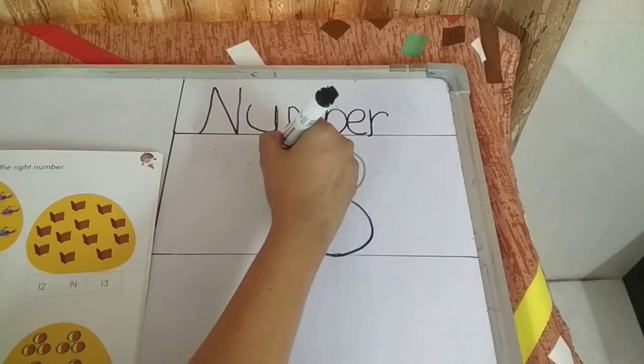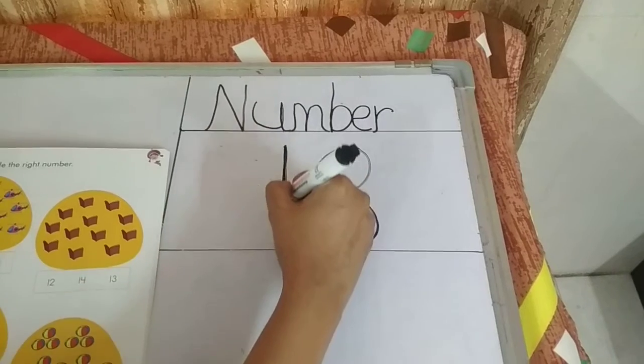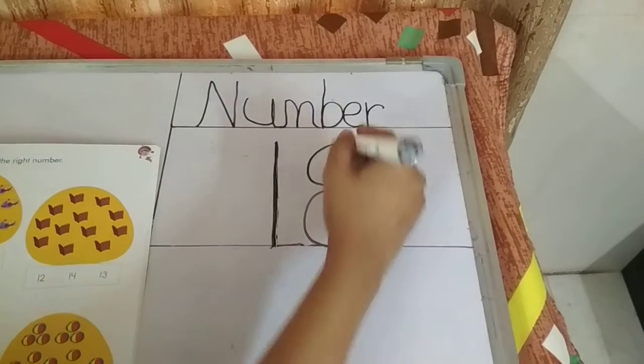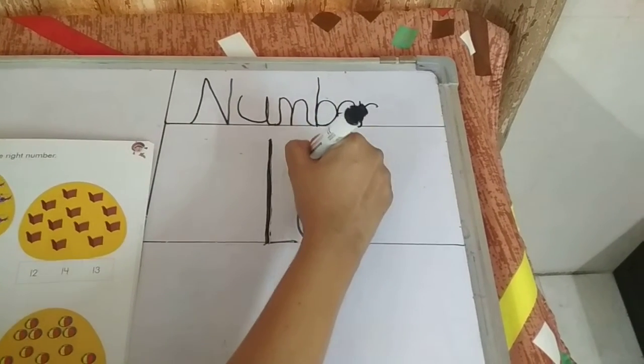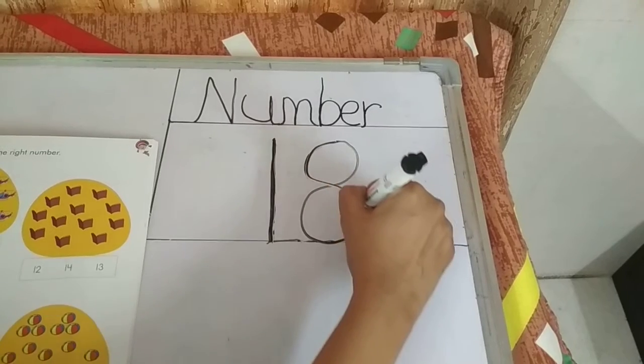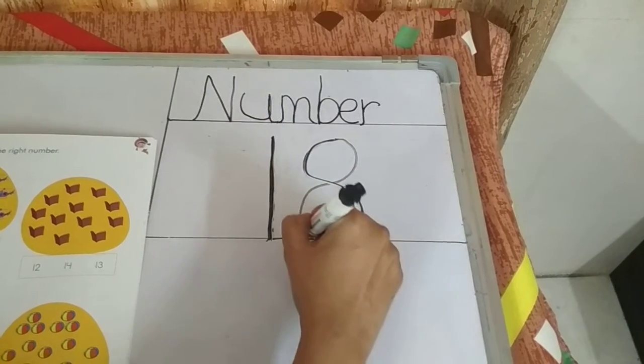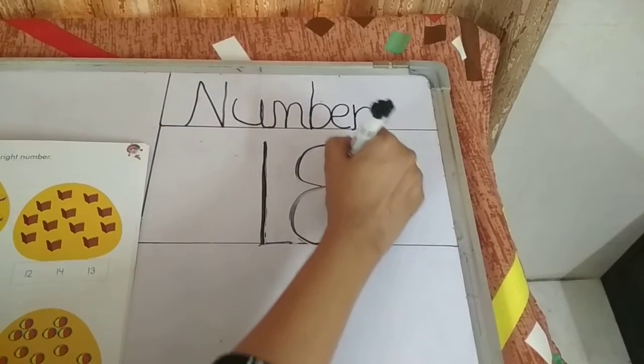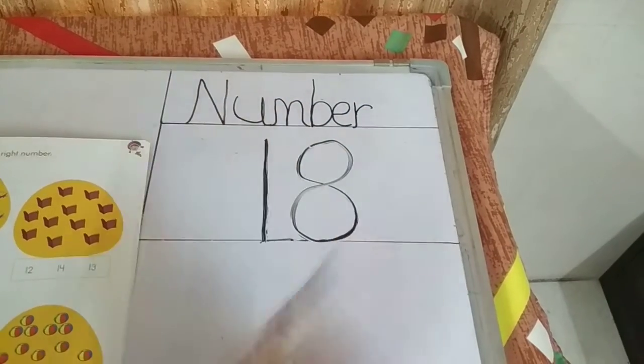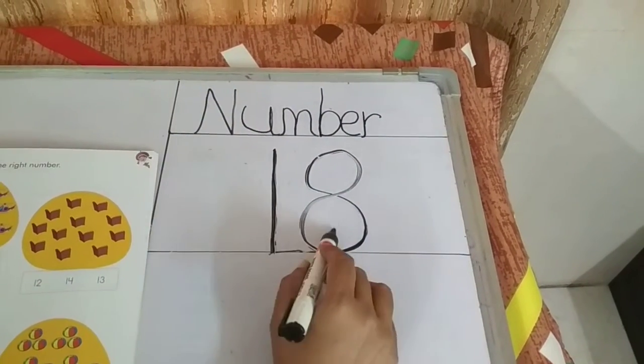How do we write? A standing line. Number 1. S. Yeah, you can see that. A curve. And reverse S pattern. Number 8. 1, 8, 18.